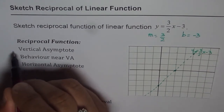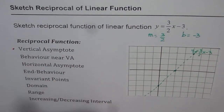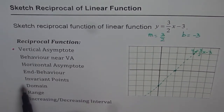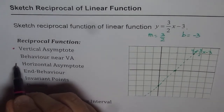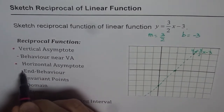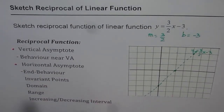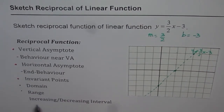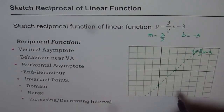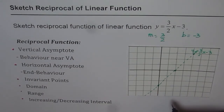Now we need to sketch the reciprocal of this function. While sketching we will consider: first, the vertical asymptote; then behavior near the vertical asymptote; then the horizontal asymptote; then end behavior near the horizontal asymptote; then invariant points; and finally domain, range, and increasing/decreasing intervals.